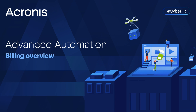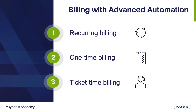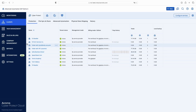Hello and welcome to the series of Advanced Automation Video Trainings. Today we'll learn more about Advanced Automation Billing Capabilities and how you can use them to automate your regular operations. Typically, most MSPs have to deal with the following types of billing: Recurring Billing, One-Time Billing, and Ticket Time Billing. We'll see how you can use Advanced Automation to handle those. Let's start with the first type, Recurring Billing.